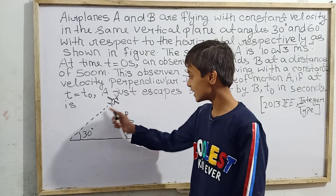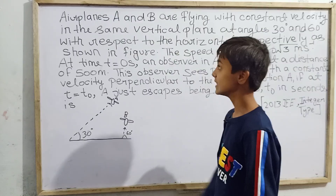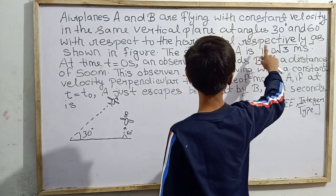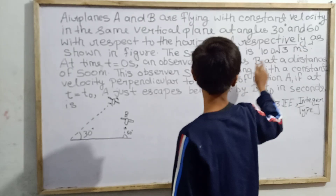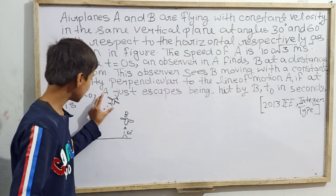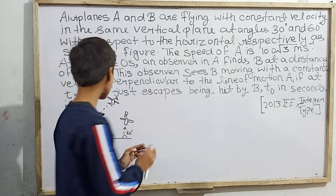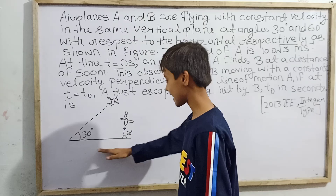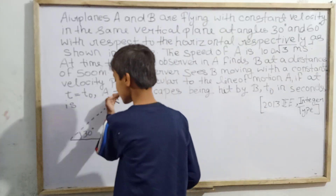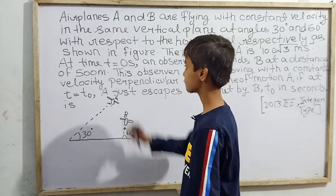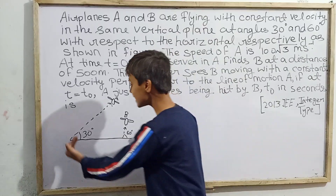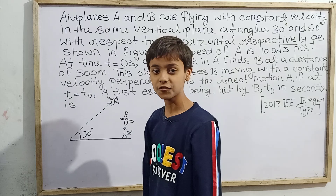The question states that airplanes A and B are flying with constant velocity in the same vertical plane at angles 30 degrees and 60 degrees with respect to the horizontal respectively. Airplane A is making an angle of 30 degrees with the horizontal x-axis, while B is making 60 degrees. The speed of A is 100√3 meters per second.